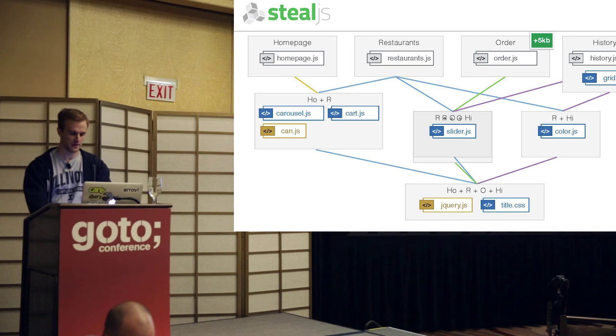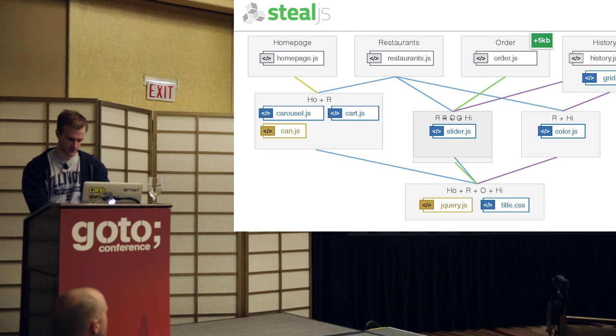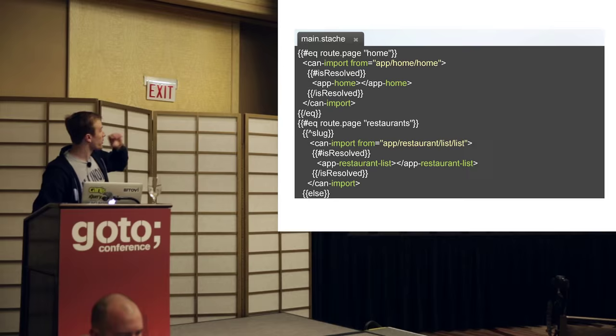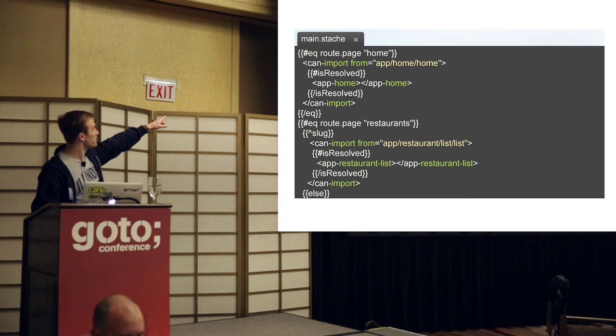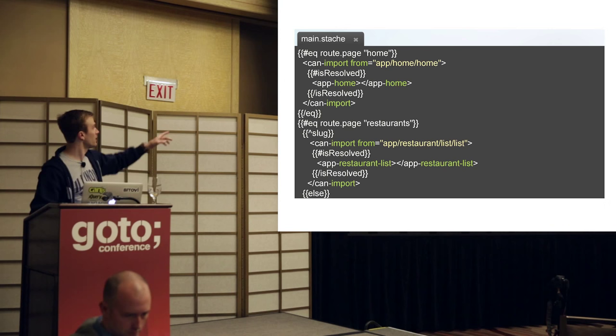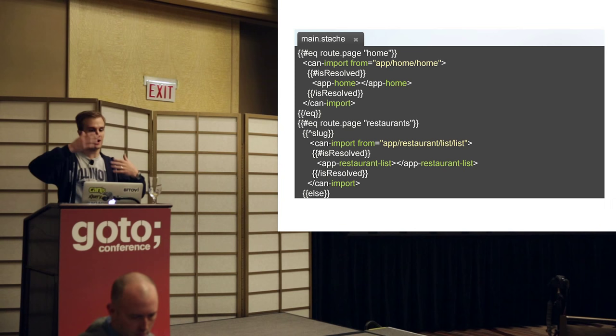Our main module is actually a template, and because we can do loading from the template, we have our routing rules: if someone navigates to the home page, we import the app-home bundle, and when it's resolved we put that element in. This way we can show a spinner as the user's JavaScript code needs to load.